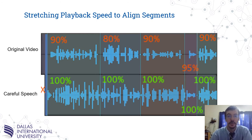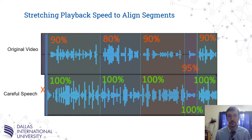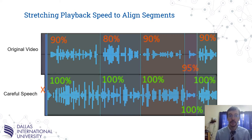Prestige uses a system I developed to align the different tracks by adjusting playback speed for each segment. I want to focus on the careful speech, so that plays at normal speed. If the first section of careful speech turned out to be 10% longer than the original, I need to play the original video 10% slower so they start and end at the same time. The second clip of careful speech was 20% longer, so I play the original 20% slower. This continues to the end of the file. As long as the audio in focus plays smoothly, the slowed video is hardly noticeable, and the sound remains constant and doesn't sound like a chipmunk.